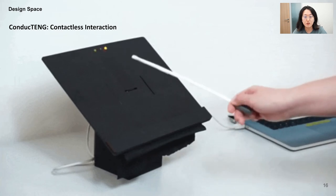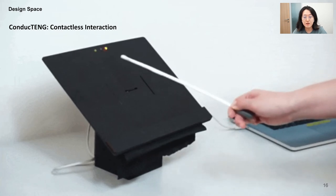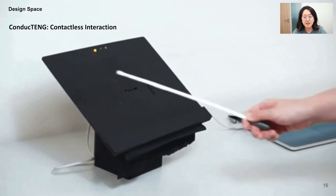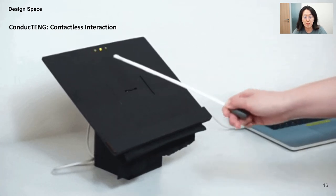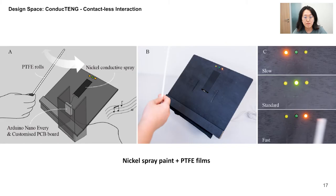The first example is a sound control device. Users can wave the baton across the stand to change the sound's tempo. This demonstrates a contactless approach to detecting physical gestures. The baton is PTFE-coated and generates triboelectric signals relative to the stand, which contains a conductive spray-painted electrode.